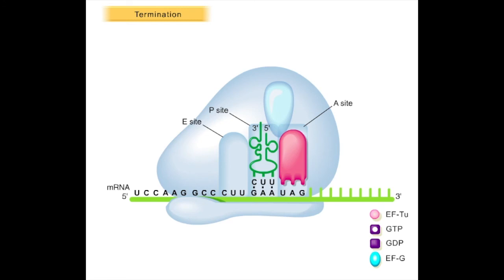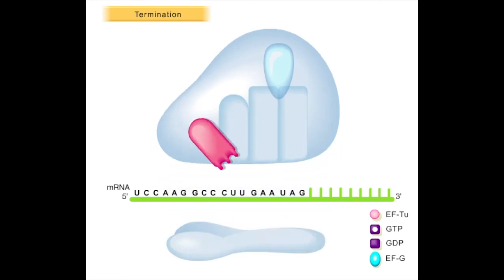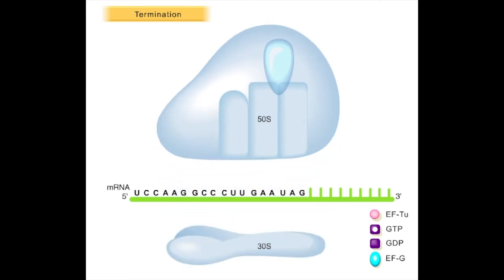The tRNA is then displaced from the P site of the ribosome, followed by disengagement of the RF and the 70S ribosome from the mRNA, and separation of the ribosome into individual 30S and 50S subunits.